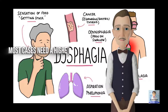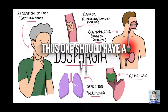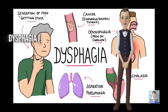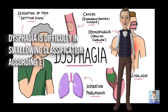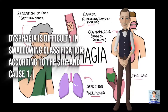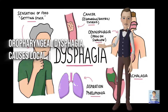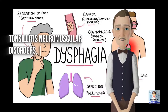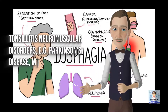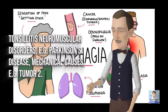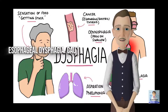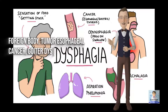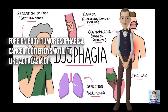Most cases need a higher level of treatment, thus one should have a tentative diagnosis and convince the patient for early management at a hospital. Dysphagia is difficulty in swallowing. Classification according to site and cause: 1. Oropharyngeal dysphagia — causes include local pain due to trauma, oral candida, tonsillitis, neuromuscular disorders such as Parkinson's disease, and mechanical causes such as tumor. 2. Esophageal dysphagia — causes include cancer, goiter, and dysmotility such as achalasia.